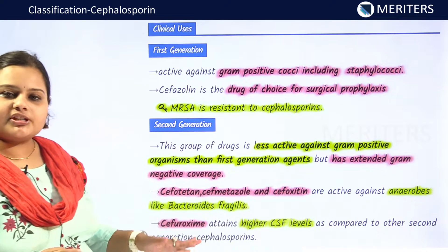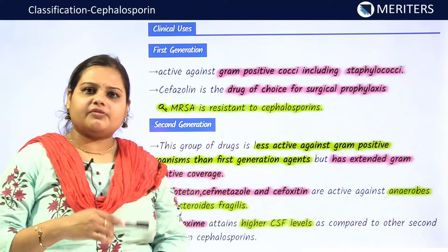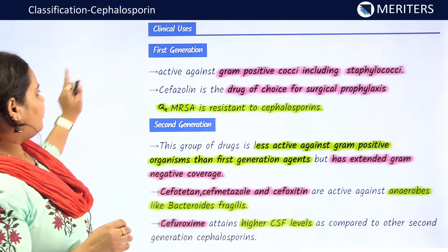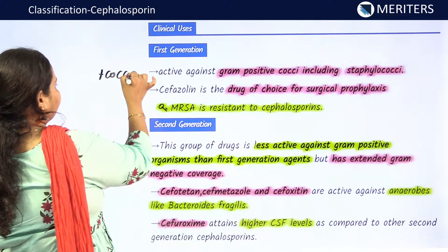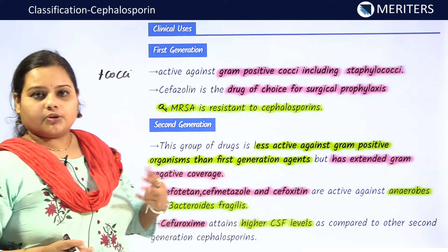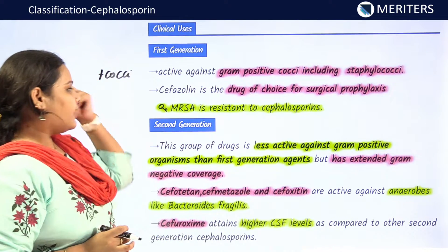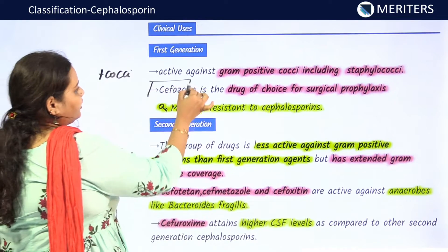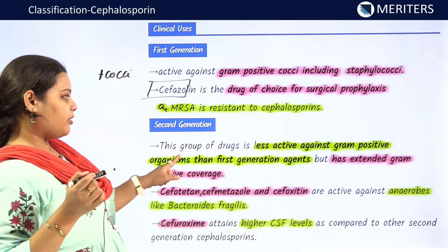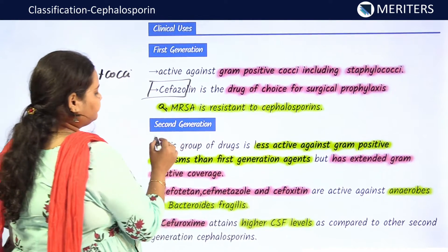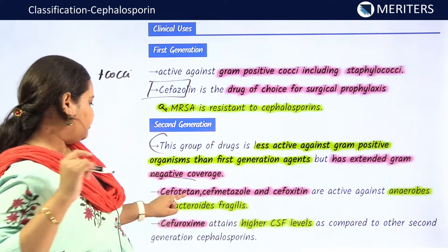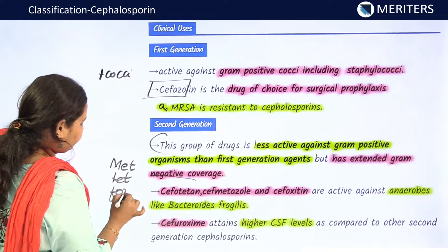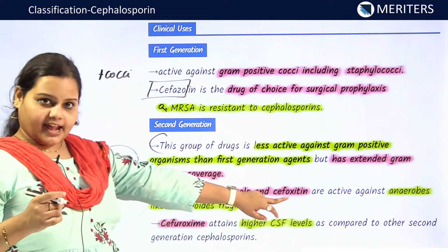Each generation of cephalosporins is susceptible to a different microbial target. First generation is active against gram-positive cocci — streptococci and staphylococci. Cefazolin is the drug of choice for surgical prophylaxis. Second generation is less active against gram-positive organisms but provides gram-negative coverage. Especially remember that cefotetan, cefoxitin, and cefmetazole — fox, tet, met — are active against anaerobes.